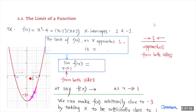So when x is getting closer and closer to 1 from both sides, what do you think about the function value f of x? Well, the function value f of x, as x gets closer and closer to 1, the y value — the function value — is getting closer and closer to negative 3. So we say that the limit of the function as x approaches 1 is equal to negative 3.